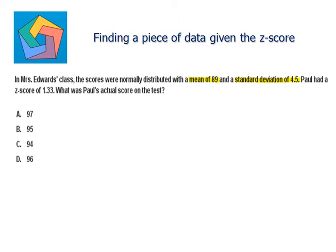Paul had a z-score of 1.33. What was Paul's actual score on the test? So, we need to find x here.